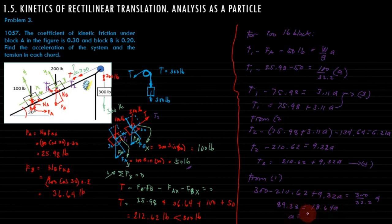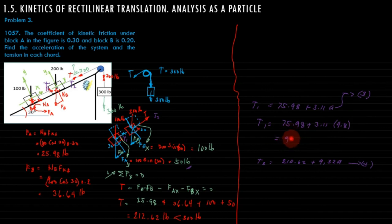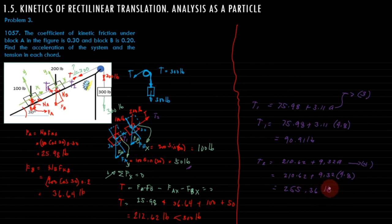Therefore A equals 4.8 ft/s². To solve for T1, using equation 3: T1 = 75.98 plus 3.11 times 4.8 equals 90.91 pounds. For T2, using equation 4: T2 = 210.62 plus 9.32 times 4.8 equals 255.36 pounds.